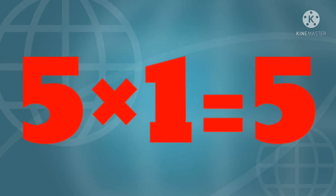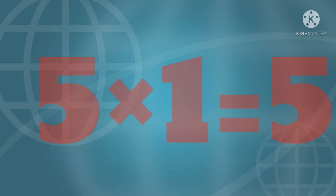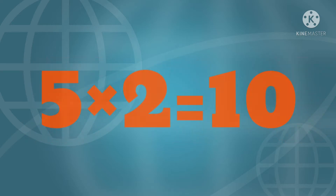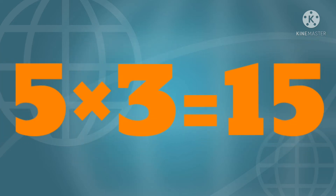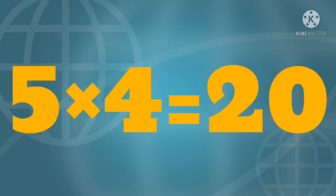Five times one is five. And five times two is ten. Five times three is fifteen. And five times four is twenty.